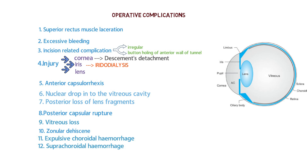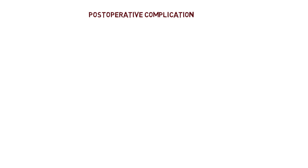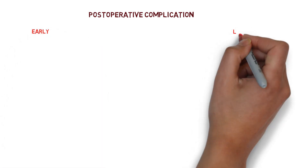To summarize operative complications step by step: superior rectus muscle laceration, excessive bleeding, incision-related complications, injury to the cornea/iris/lens, anterior capsulorrhexis complications, nuclear drop or posterior lens fragment loss, posterior capsular rupture, vitreous loss, and expulsive or suprachoroidal hemorrhage.